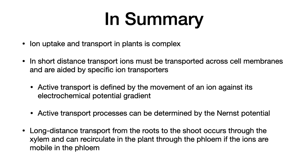To summarize this lecture: ion uptake and transport in plants is obviously quite complex. In short-distance transport, ions must be transported across cell membranes aided by specific ion transporters. Active transport is defined by the movement of an ion against its electrochemical potential gradient, and can be determined by the Nernst potential. Long-distance transport from the roots to the shoot occurs through the xylem, and can recirculate in the plant through the phloem if the ions are mobile in the phloem. I hope you enjoyed this lecture. If you like it and want to see more, please like it on my YouTube channel.